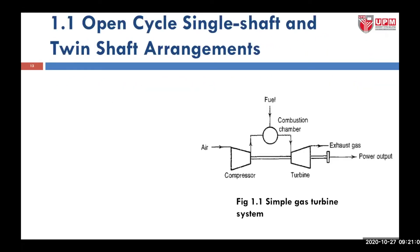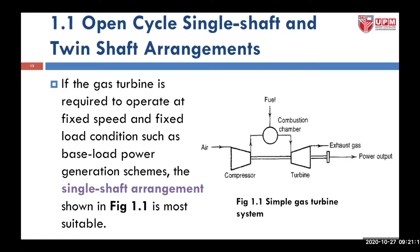This schematic, figure 1.1, shows a simple gas turbine system. If the gas turbine is required to operate at a fixed speed — you fix the speed and fix the load conditions such as a base load power generation scheme — the single shaft arrangement shown in figure 1.1 is more suitable. It is as simple as having a compressor connected via a shaft to the turbine, giving you the power output.